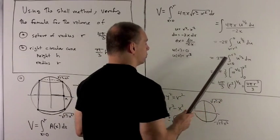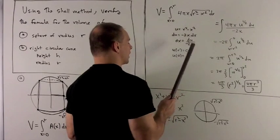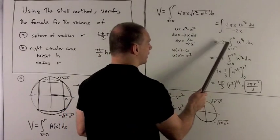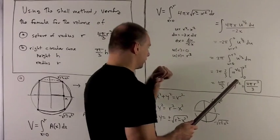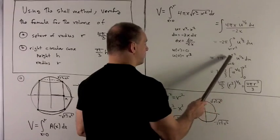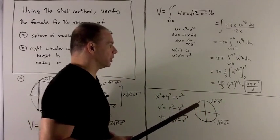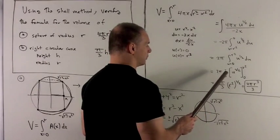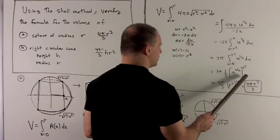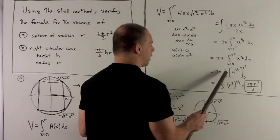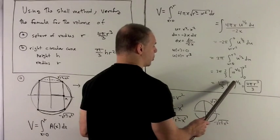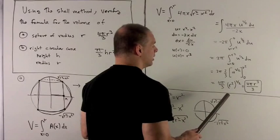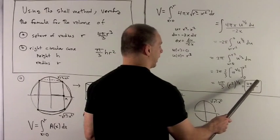This is all in u, so I can put the u limits in. If I put r into r² - x², I get 0. If I put 0 into r² - x², I get r². So I can get rid of the minus sign by flipping the order of integration. u^(1/2), we know how to take its antiderivative. Add 1 and flip it over, giving me 3/2 as my new exponent and 2/3 in front. We're evaluating from 0 to r². Collecting everything in front gives me 4π/3, and then r² raised to the 3/2 gives r³, so I get 4πr³/3.